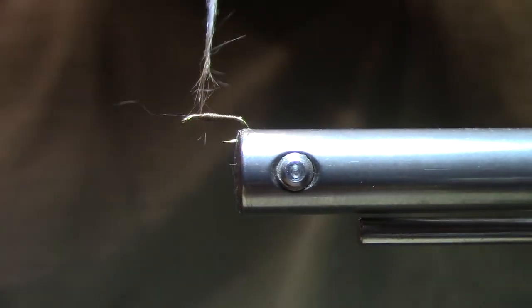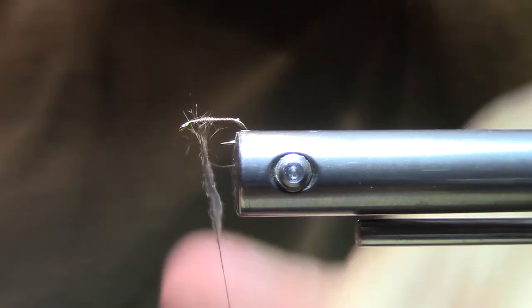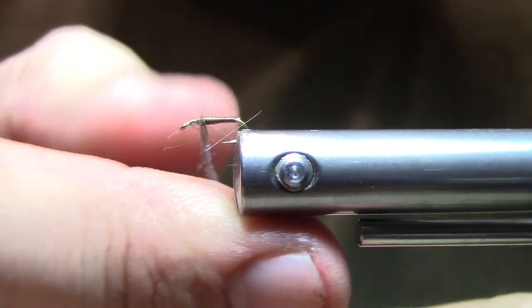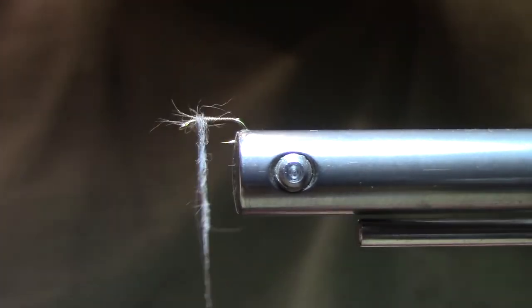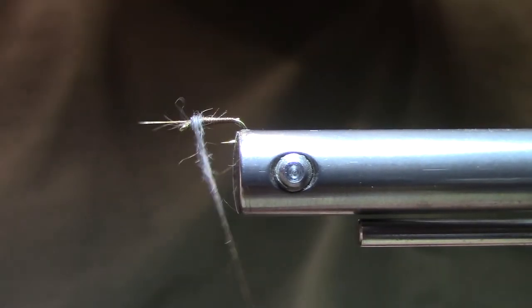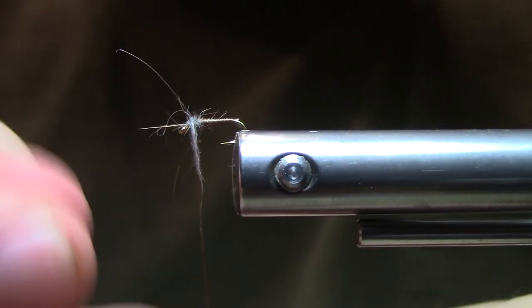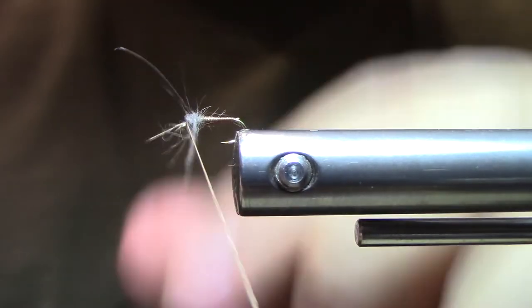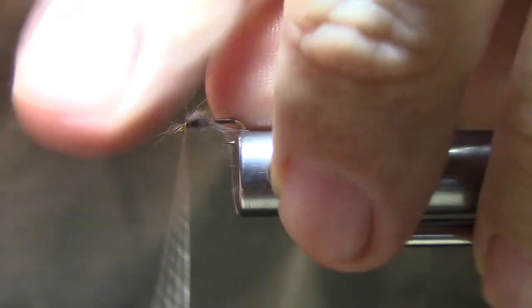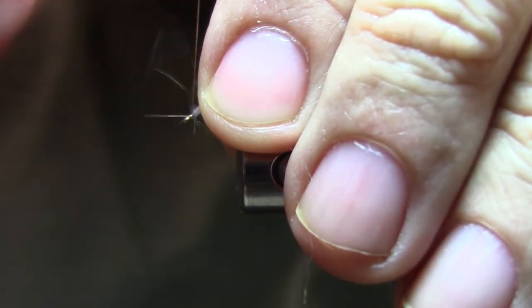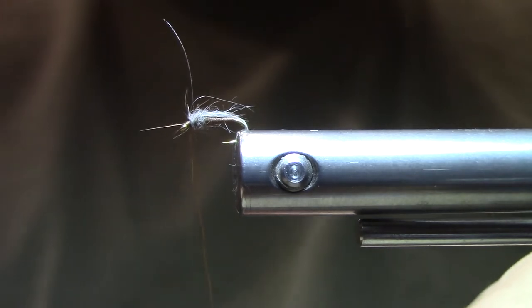And this is not going to be too tightly dubbed. We're not like doing a dry fly dubbing. This is more of a loose sort of thorax that we're forming. And that's about enough. Take away any excess. Come forward. I like to do a turn or two in front of the dubbing. And then we'll go straight into the whip finish.